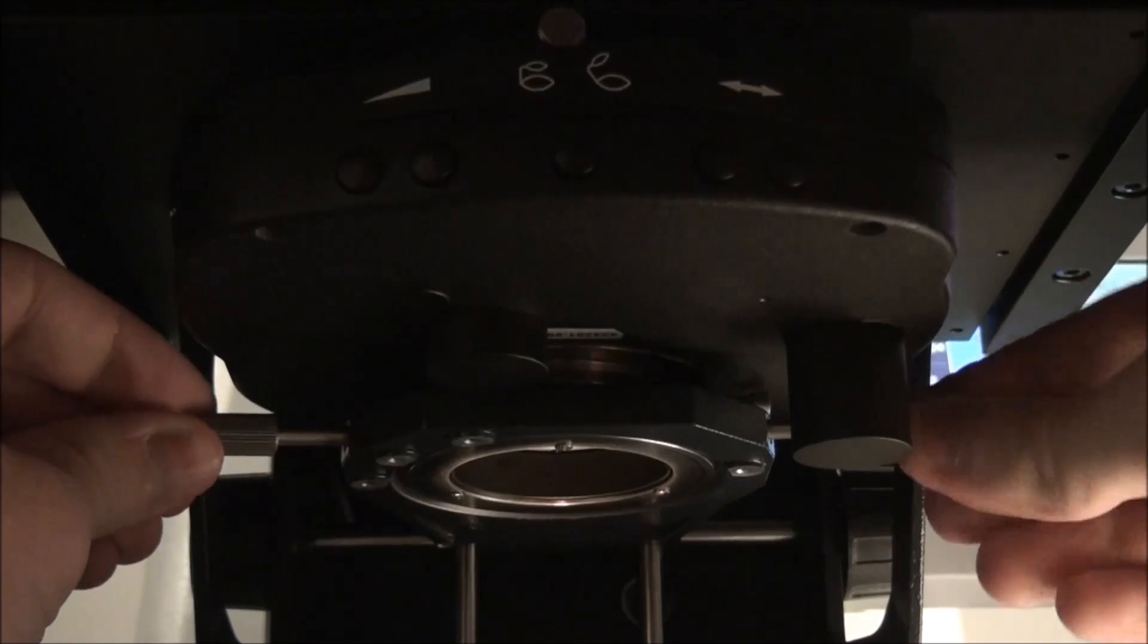Step 10: Center the field diaphragm using the centering screws under the condenser.